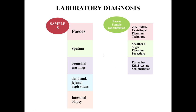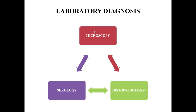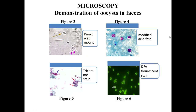For laboratory diagnosis, the main samples are feces, sputum in case of respiratory disease, bronchial washings, duodenal or jejunal aspirates, or intestinal biopsy. For fecal samples especially, one should perform concentration before attempting to detect the organism — using zinc sulfate centrifugal flotation, Sheather's sugar flotation technique, or formal-ether concentration. The three main approaches for diagnosis are microscopy, serology, and histopathology.